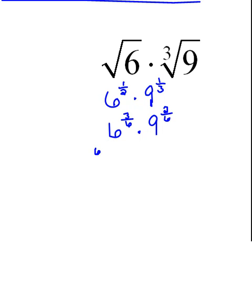If I rewrite them as radicals, this would be the 6th root of 6 cubed times the 6th root of 9 squared. Now that they're the same index, we can multiply our radicands.